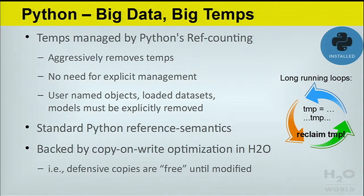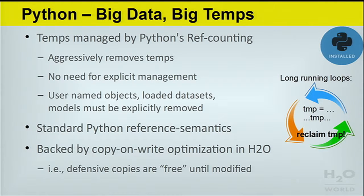One of the big sore points we had with R — and we've fixed it for both Python and R — was big data, big temps. The problem is simply: you have a long-running loop, you're doing complicated feature munging, you're building lots and lots of temps, and if you've got big data you have big temps. After a while you run out of memory. So we've figured out how to do all the temp reclamation for you. It's managed by the Python client using Python's ref counting — so when a function exits, whenever a lexical scope ends, Python calls the finalizer and cleans out all the temps that are dead at that point. You won't need to manually manage what's left alive at the end of your loop.